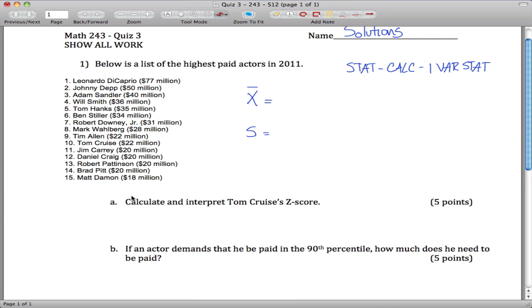If you do that, putting all of this into a list, what you get is x bar is 31.53 repeating, and the standard deviation is 15.65.